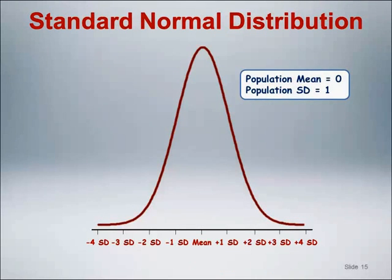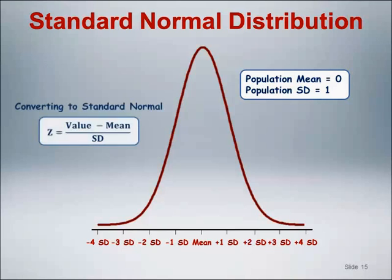I want to also mention a special Gaussian distribution called the standard normal distribution. This is a Gaussian distribution with a mean of 0 and a standard deviation of 1. All Gaussian distributions can be converted to a standard normal distribution by subtracting the mean from each value in the population and dividing this difference by the standard deviation. We call the resulting value a z-score, which represents the number of standard deviations away from the mean.